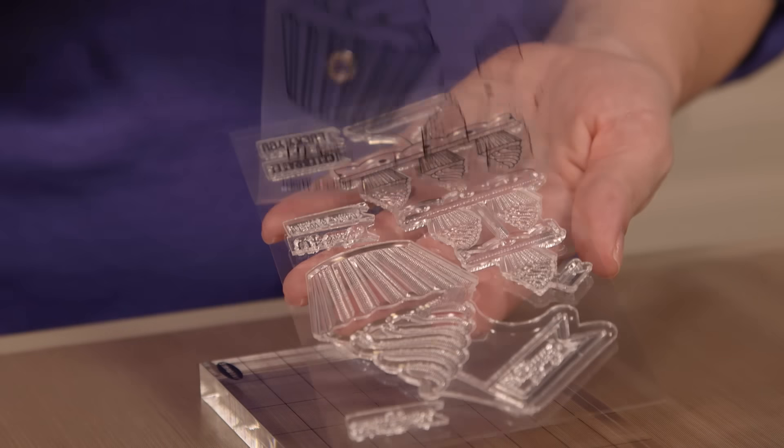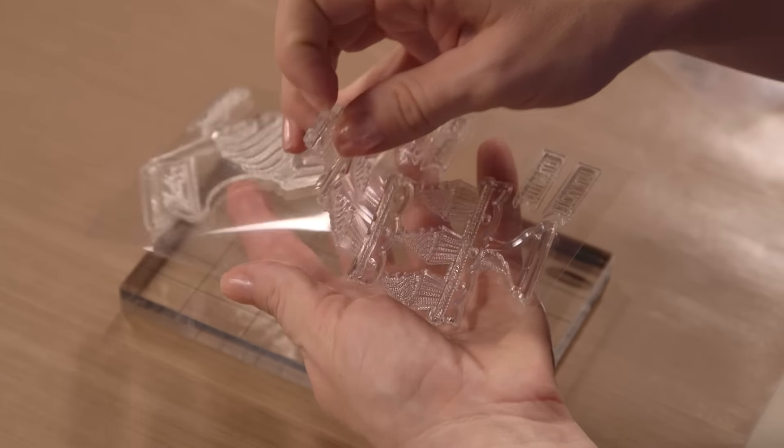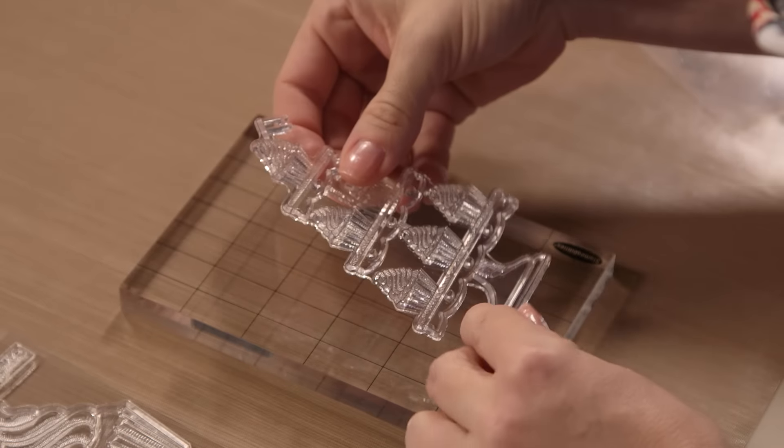To use clear stamps, you'll need to remove them from the plastic backer sheet and stick them onto a clear acrylic block. The lines on the blocks help you get the stamp nice and straight and ready to go.